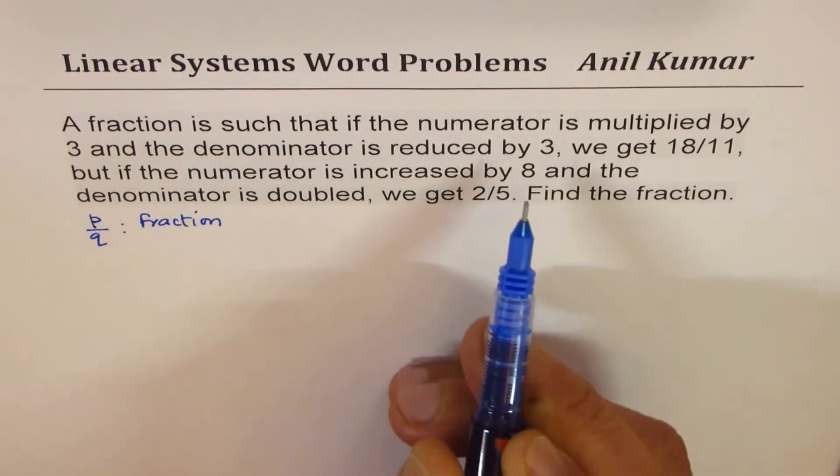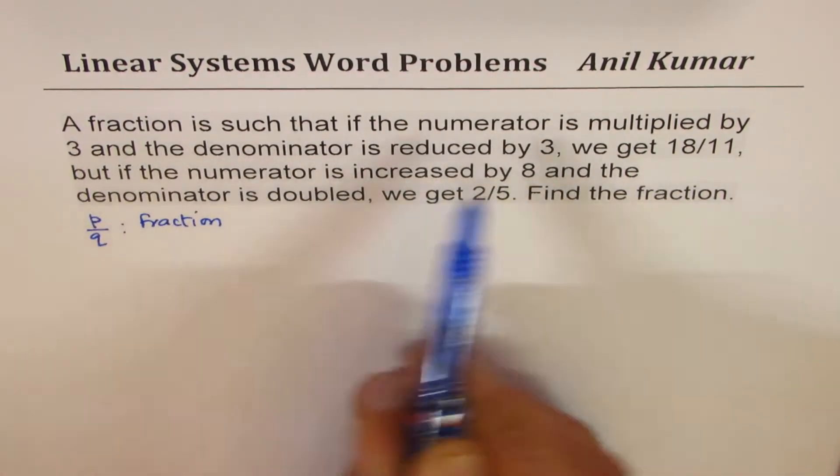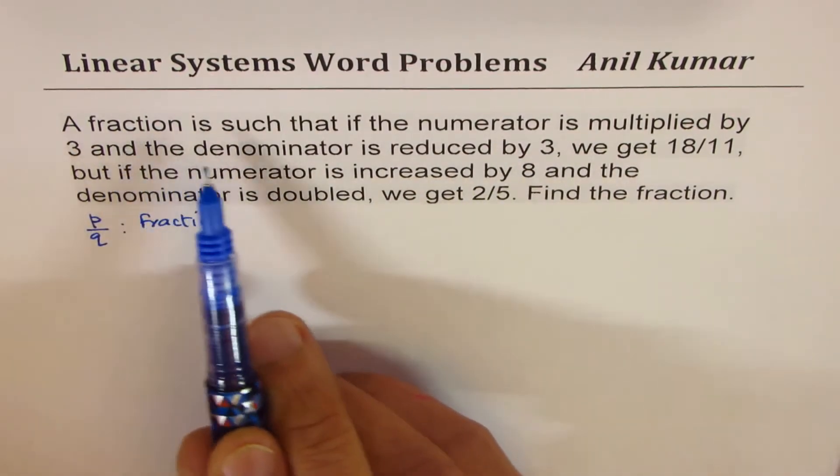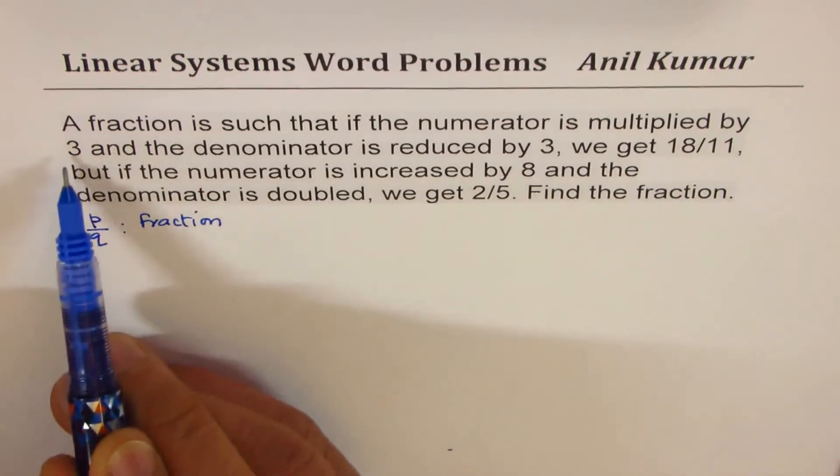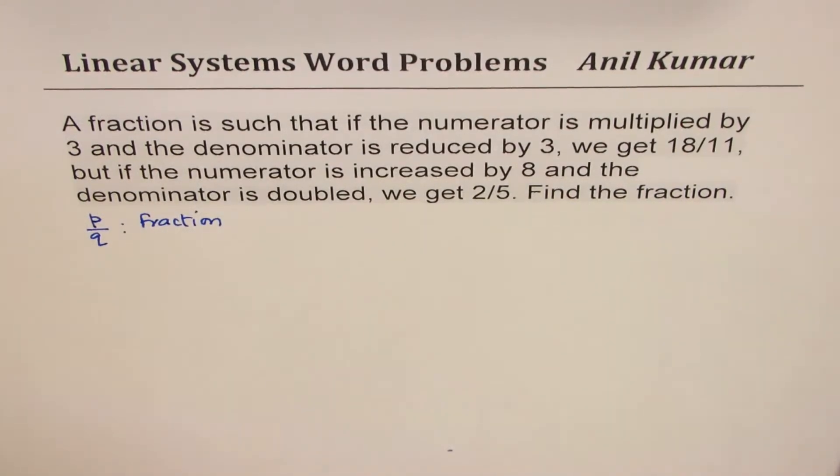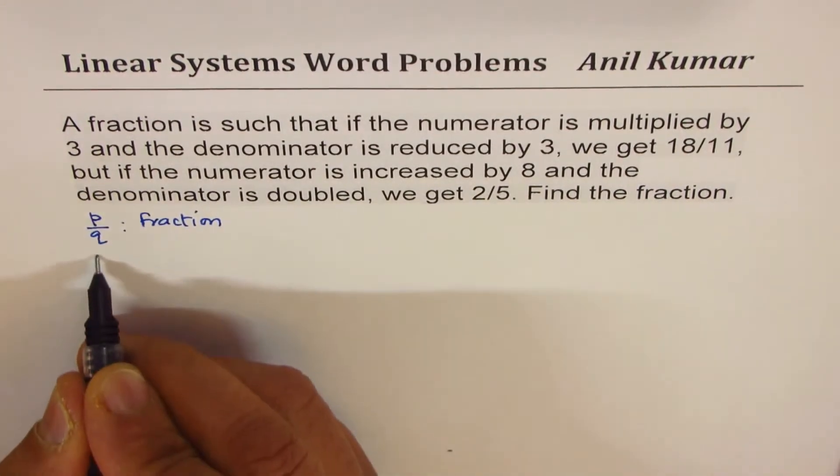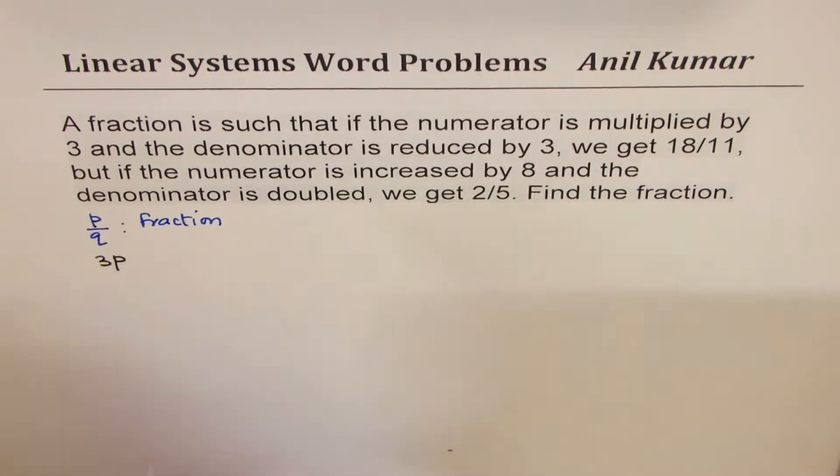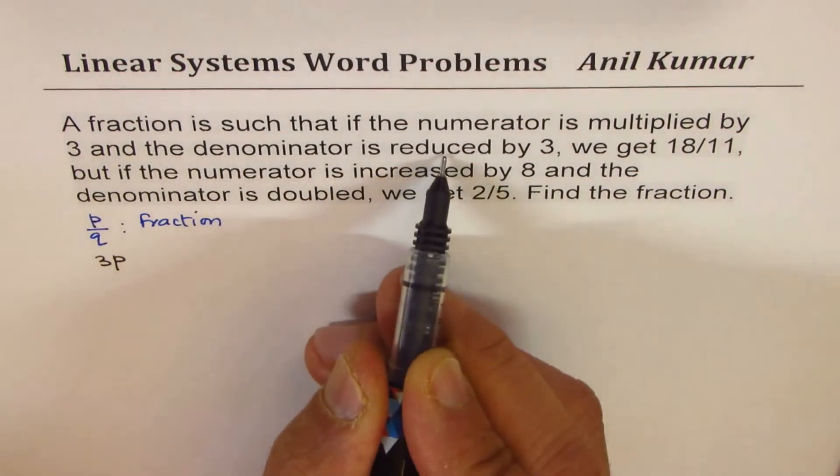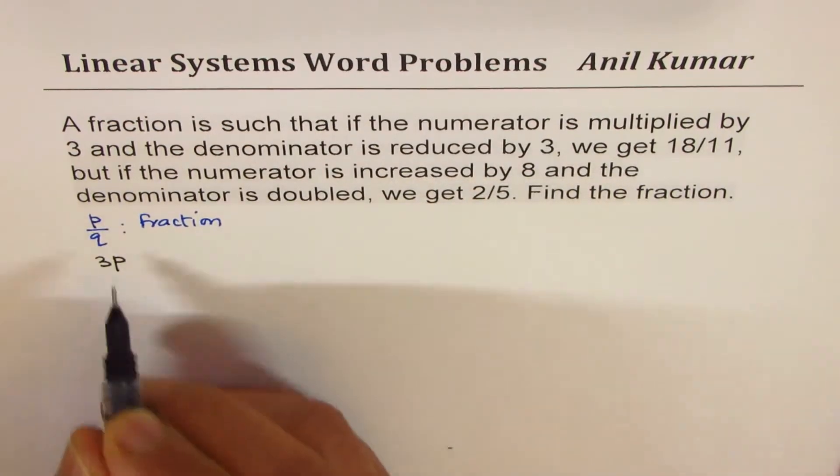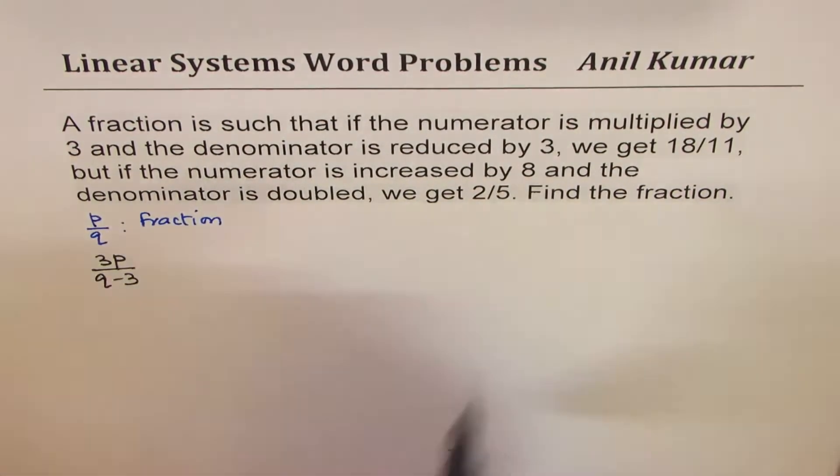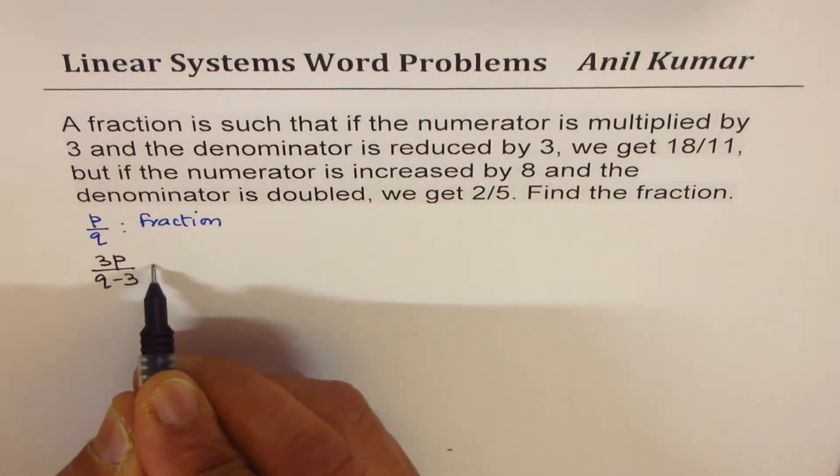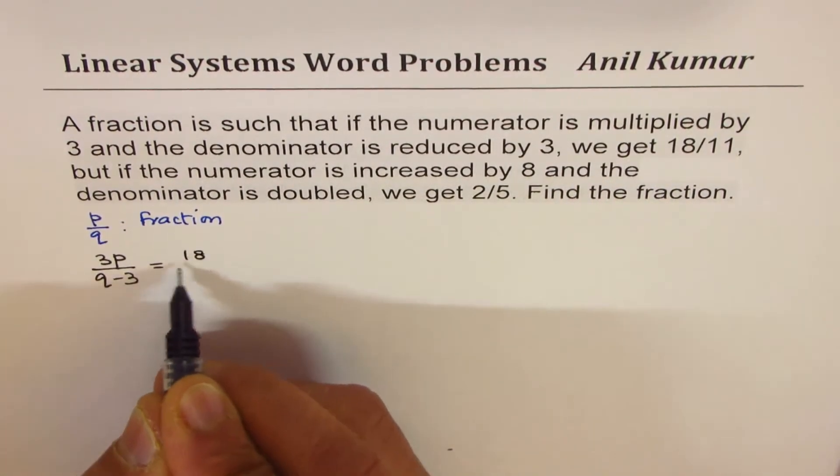Now based on this, we'll make an equation as we read. A fraction is such that if the numerator is multiplied by 3, so we have to multiply a numerator, which is p, by 3. And denominator is reduced by 3. Reduce means subtract. So q minus 3. We get 18 over 11. We get 18 over 11.